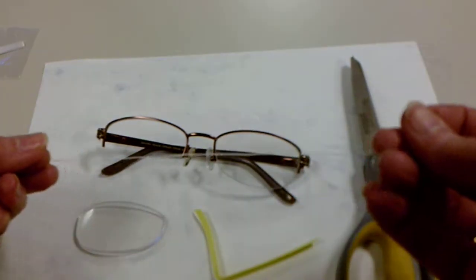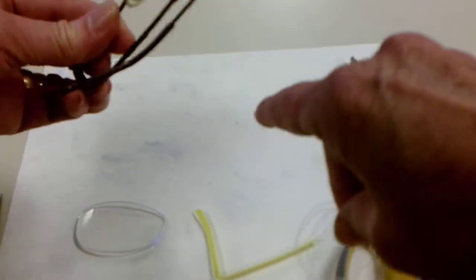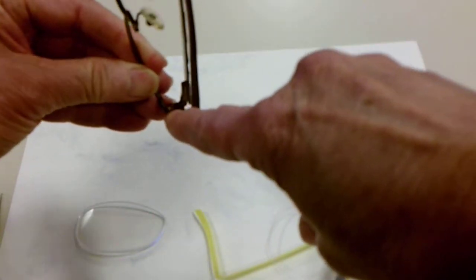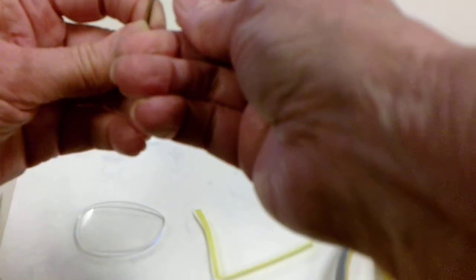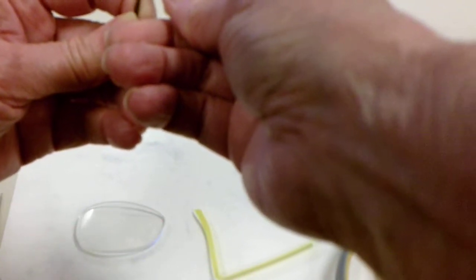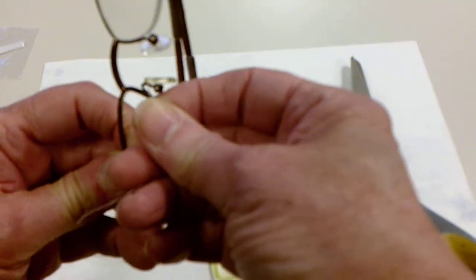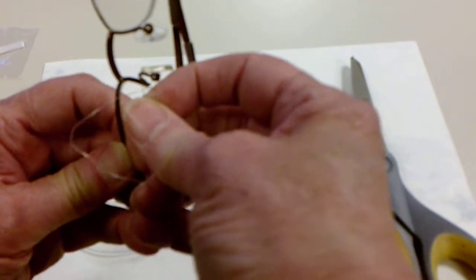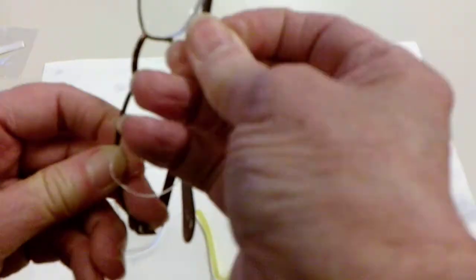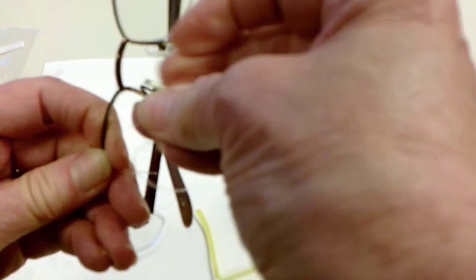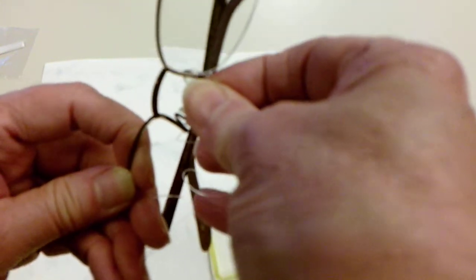We're going to start by looking at the little holes. There's two holes here at the nasal and two holes here at the outside corner. We're going to take our rimless string and thread it through the bottom hole. There we go. And then back through the next hole. This basic lens is held in by tension.